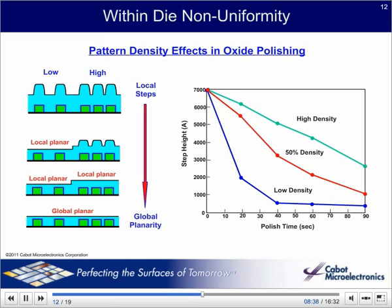This slide shows how the surface is planarized. Normally the planarization takes place step by step, from local planarization to global planarization as shown in the cartoon. The local planarization takes place in a low density area first, since the downforce is more concentrated there. In a high density area, it takes more time to complete planarization, mainly because the mechanical forces are lower when spread over more features. The graph is showing step height reduction as a function of polishing time with different pattern densities. The step height is quickly reduced in low density areas within a shorter time, but it takes more time in a high density area. Sometimes pattern densities are hard to eliminate.